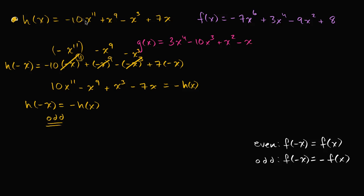One telltale signature for it is that h of x is made up of a bunch of odd functions. Each term has an odd exponent — 11th, 9th, 3rd, and 1st — which makes each one an odd function by itself. When you add up a bunch of odd functions, you get an odd function. All of these have odd exponents on them, which make them odd functions.